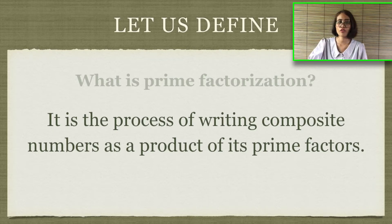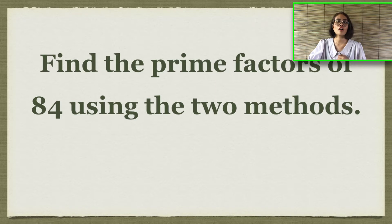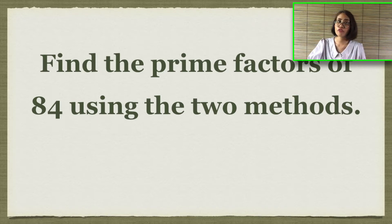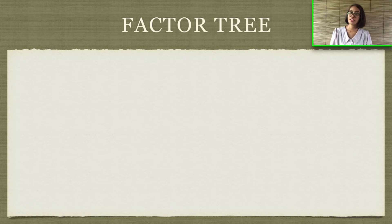Let us try to find the prime factors of number 84 using two methods. We're going to show you the two methods of finding the prime factors. The first method is using a factor tree, with the number 84 on top.